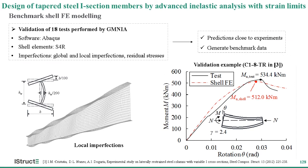In this study, shell FE models directly account for the instability and plasticity effects that adversely influence member resistances, and are used as benchmarks to evaluate the accuracy of the proposed design method. First, we need to validate the shell FE modeling against experiments collected from literature. The left figure shows the local imperfections introduced into the shell FE models, and the right figure shows a validation example. It can be seen that the load-deformation path obtained from the shell FE model closely follows the experimentally determined path, and the prediction is very close to the test result. Hence, the developed shell FE models can be used to generate benchmark data.